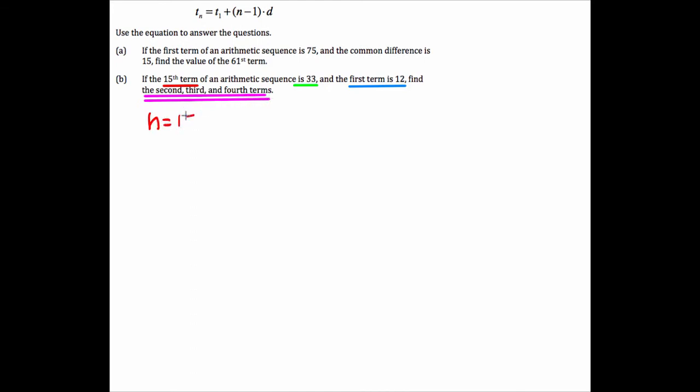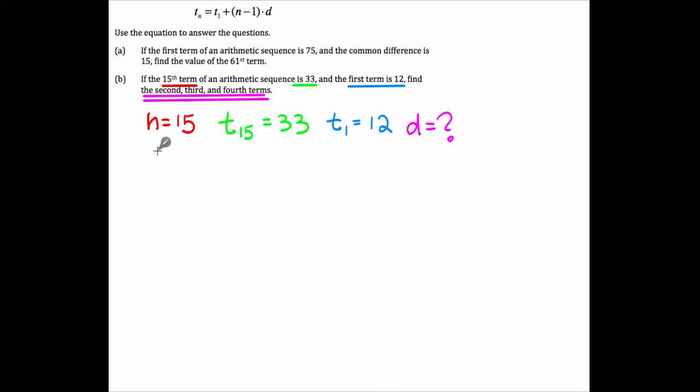So n equals 15. And we know the value, T sub 15, is 33. The very first term, T sub 1, is 12. And what we don't know is the common difference.